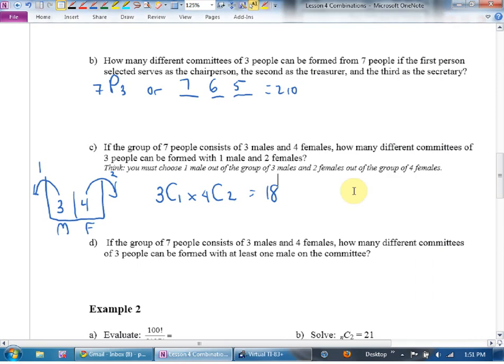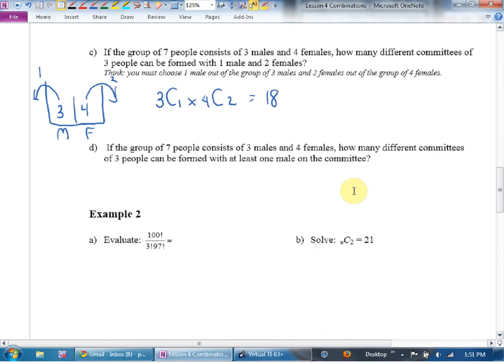D. Read D very carefully to yourself, please. And what's the difference between C and D? There's one key phrase that makes it a completely different question. At least. And it's so important, I'm going to underline it in red. The fancy term for this, we say that this is looking at different cases. And to solve these, what we have to do is we have to list each case. Did you hear what I said back here? I said one male from three and two females from four. What does the word and mean in combinatorics? Multiply.